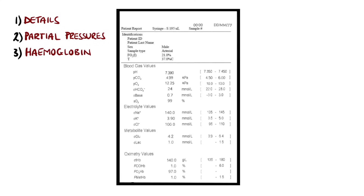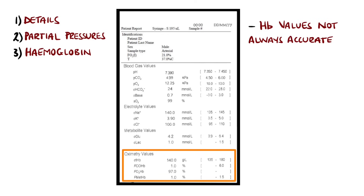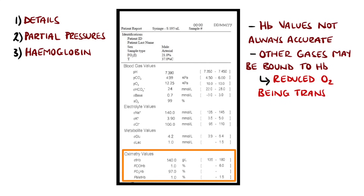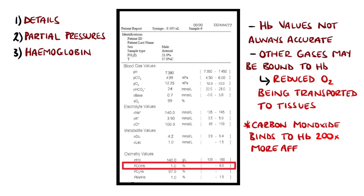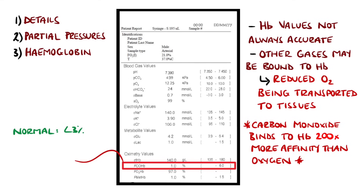I include haemoglobin and other variants of it, such as carboxyhaemoglobin and methaemoglobin here as well, because these are easy to overlook on an ABG when they actually give some information on the oxygen carrying capacity of the blood. The haemoglobin level may not be particularly accurate, but it can help give a rough idea of the presence or absence of severe anaemia. Carboxyhaemoglobin is when carbon monoxide binds to haemoglobin instead of oxygen, and it does this 200 times more strongly than oxygen, meaning less space is available for haemoglobin to transport oxygen. Normal values are typically less than 3% in non-smokers, and can be as high as 15% in smokers, although symptoms such as headache typically appear at around 10%.